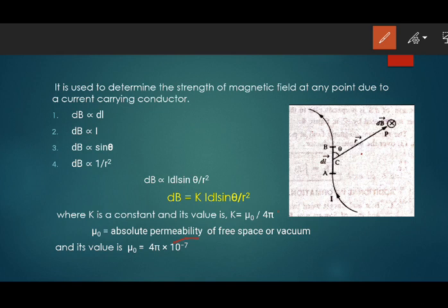μ₀ is known as absolute permeability of free space or vacuum. It is similar to permittivity from the electrostatics chapter. Physically, permeability means how easily magnetic field can pass through a medium. Mathematically, μ₀ is 4π × 10⁻⁷ tesla meter per ampere. This is the unit of μ₀. This is what Biot-Savart's Law is.